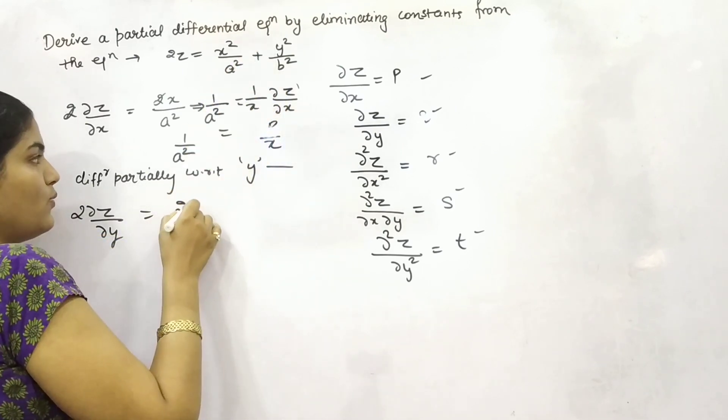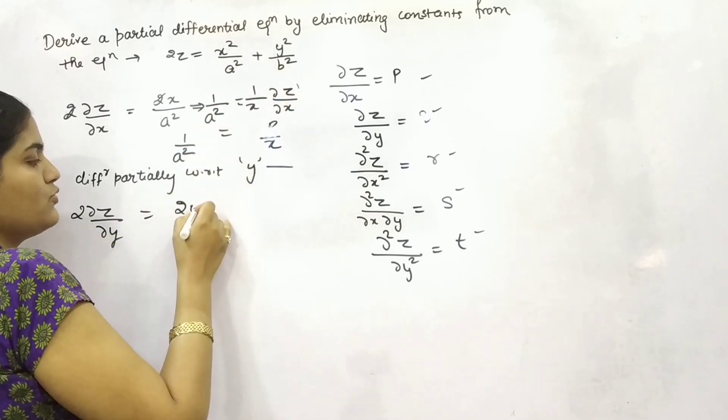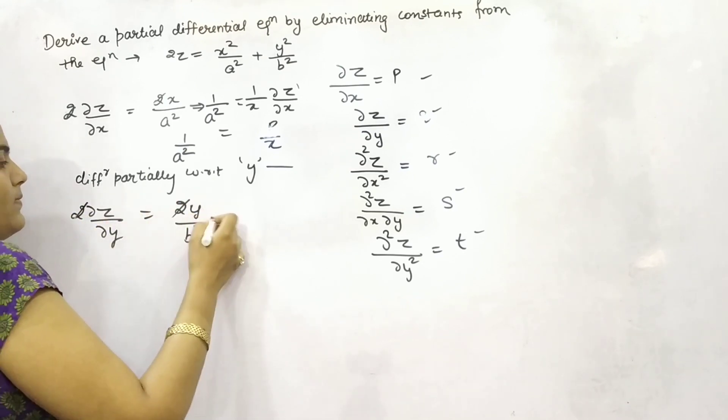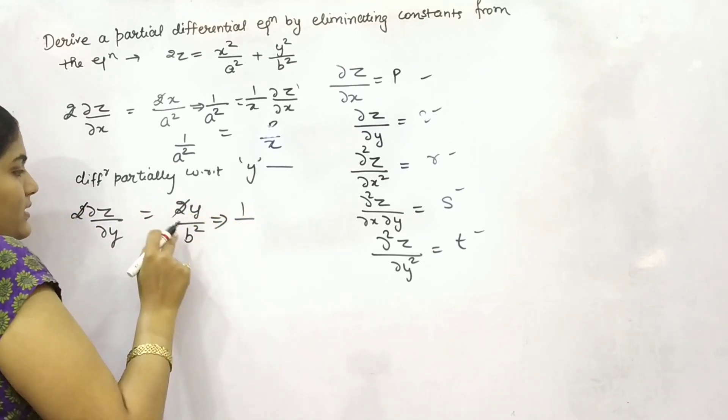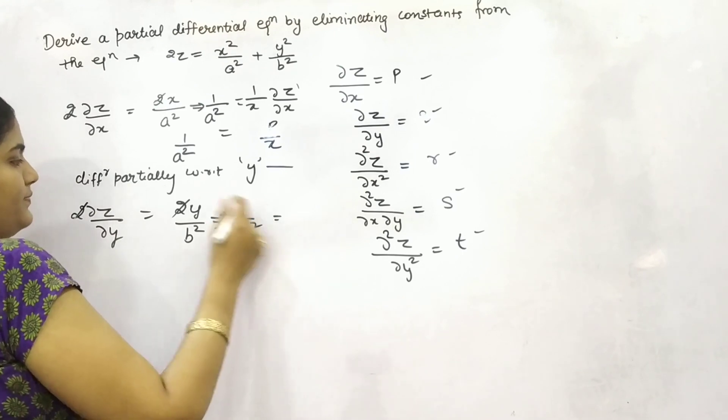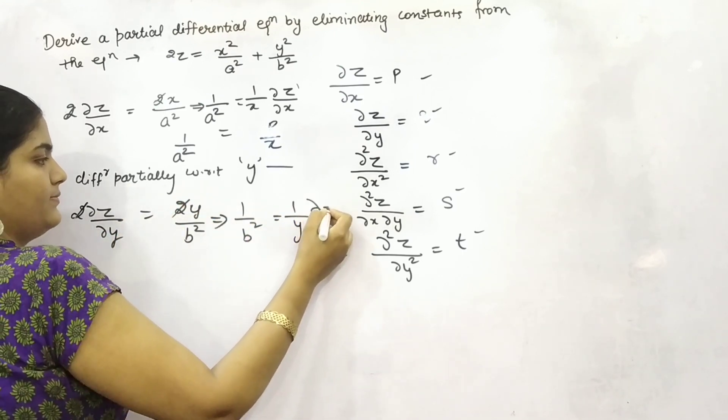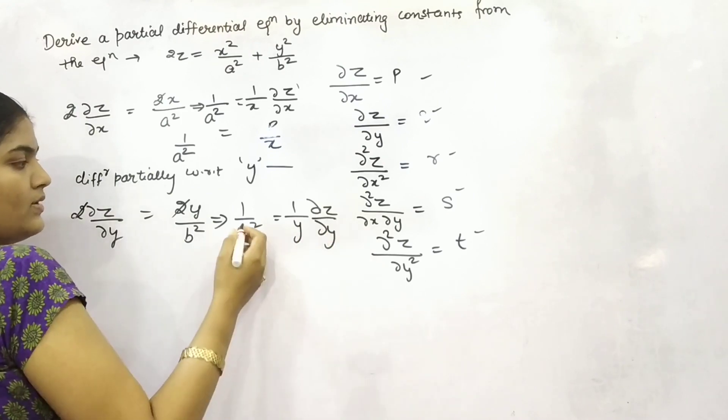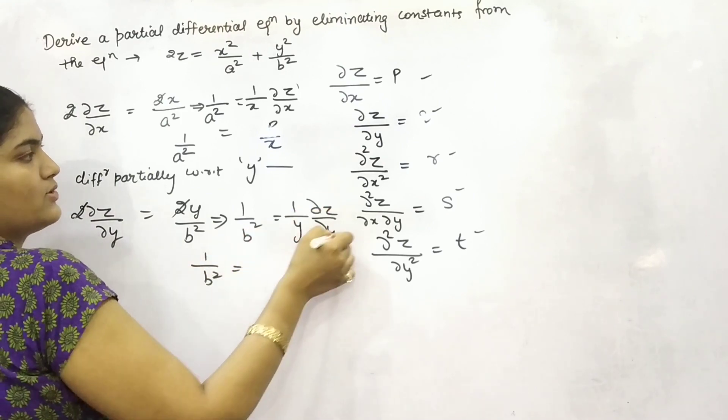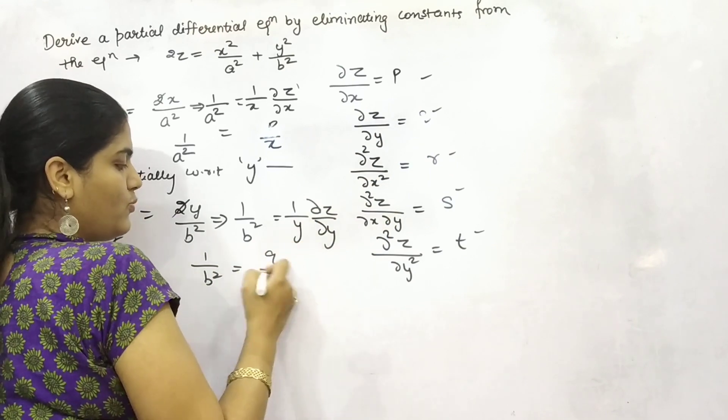So 2y, this will be 2y by b square. So that means 1 by b square, if you take y in denominator form left hand side, that means 1 by b square will be this is your q, q by y.